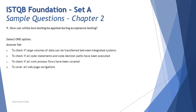Option C: to check if all work process flows have been covered. Workflow, business process, and business flow are all at the business perspective. When you talk about use cases and overall business flow, these are done at the back-end white box level. If you've referred to the syllabus, you'll know that business workflows are indeed tested as part of acceptance testing — it's written there.